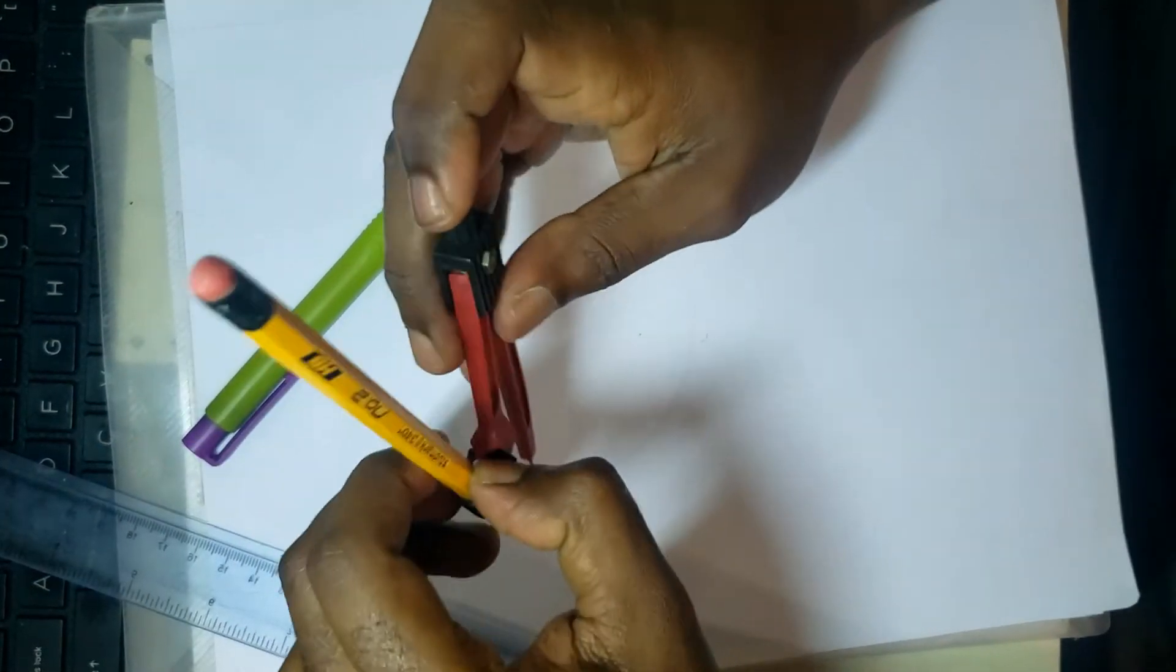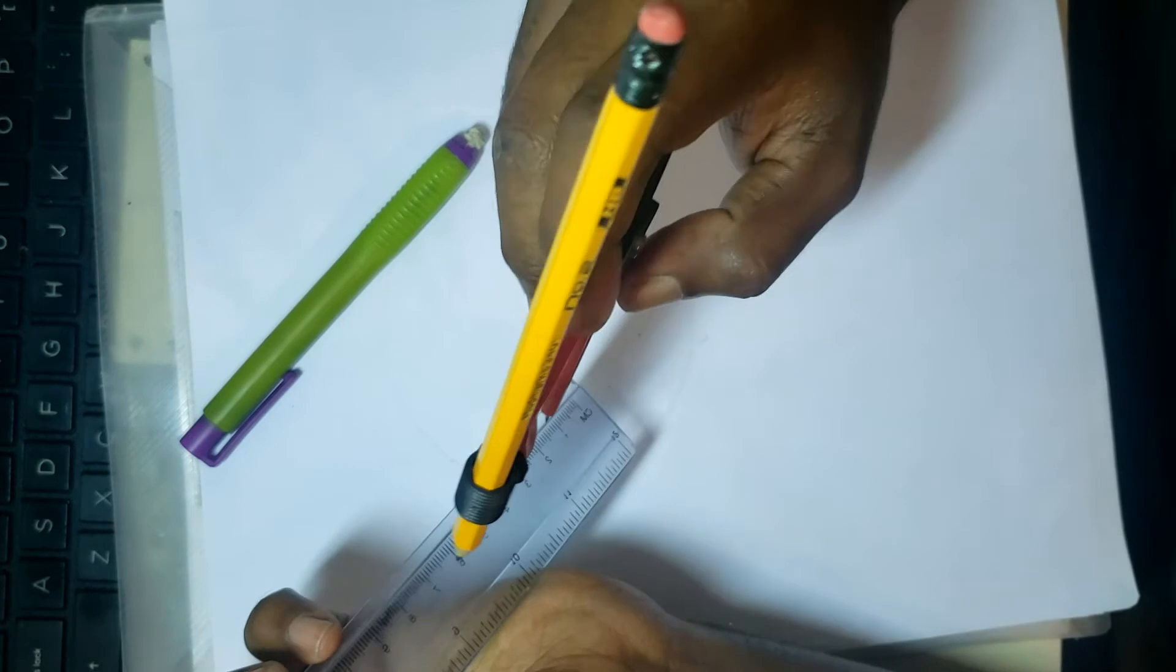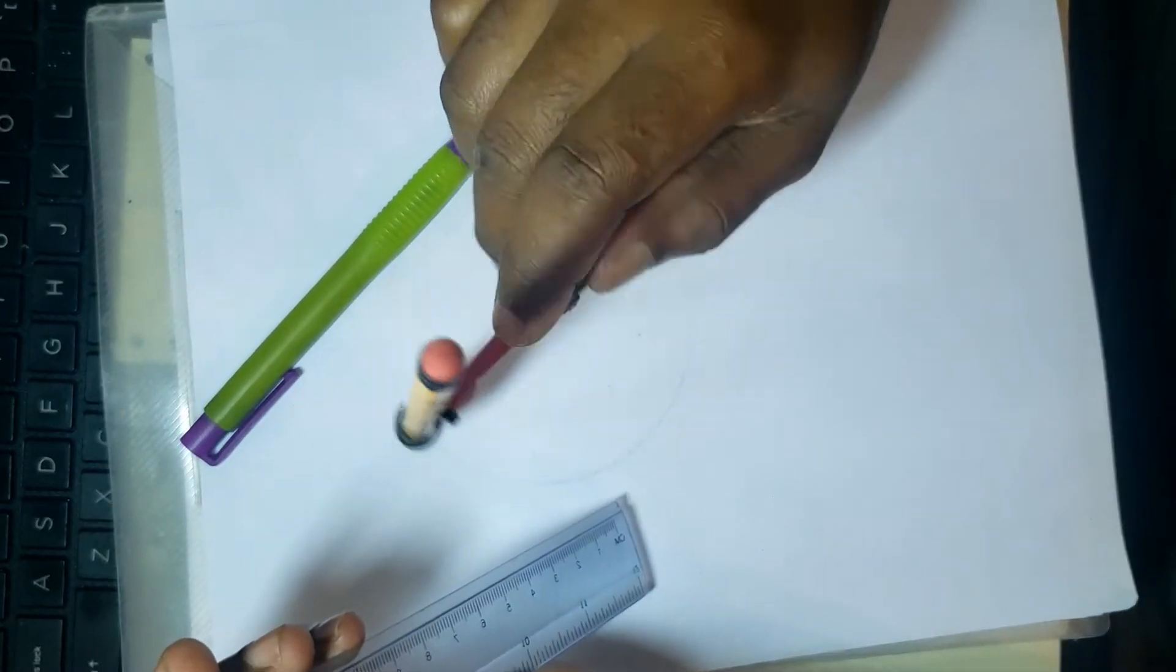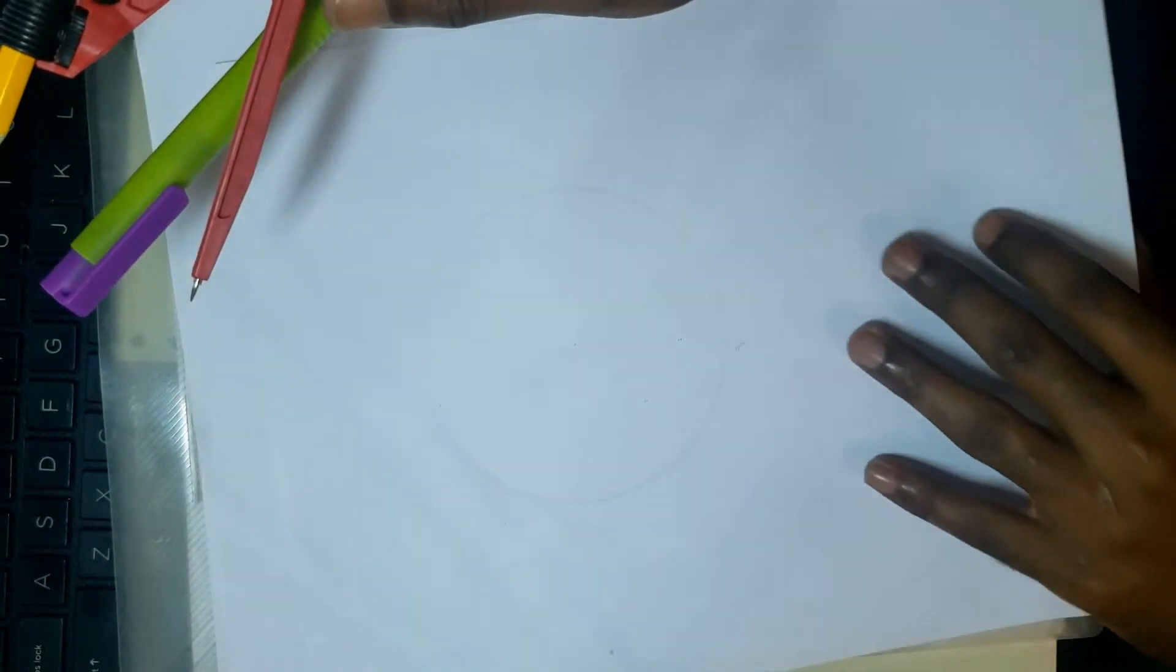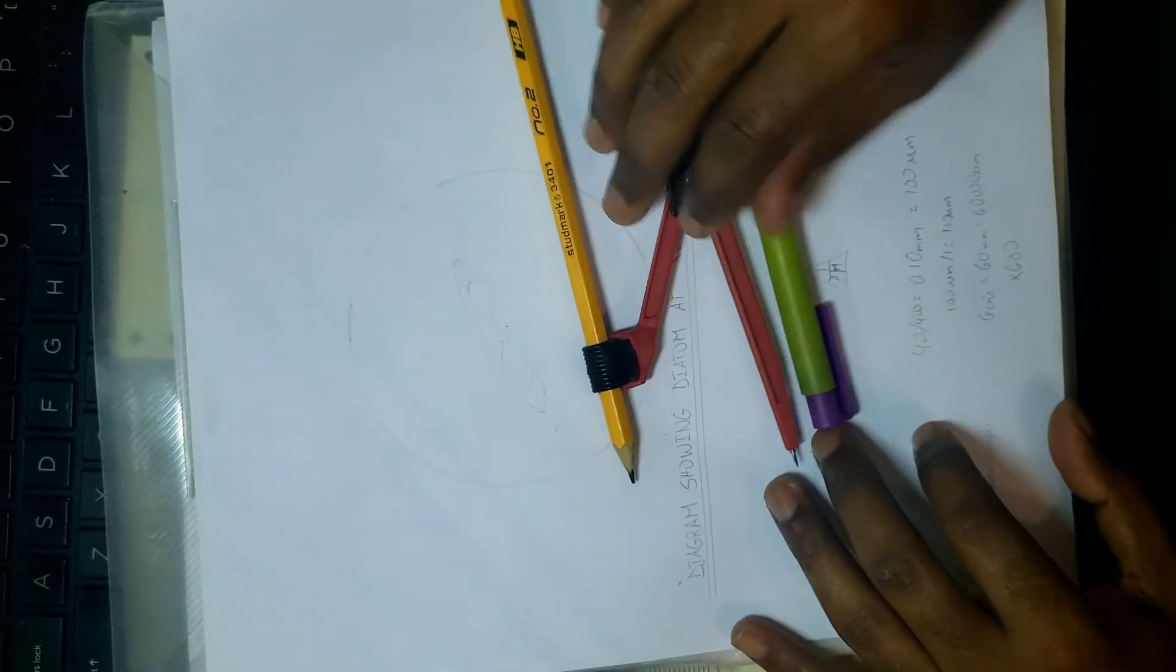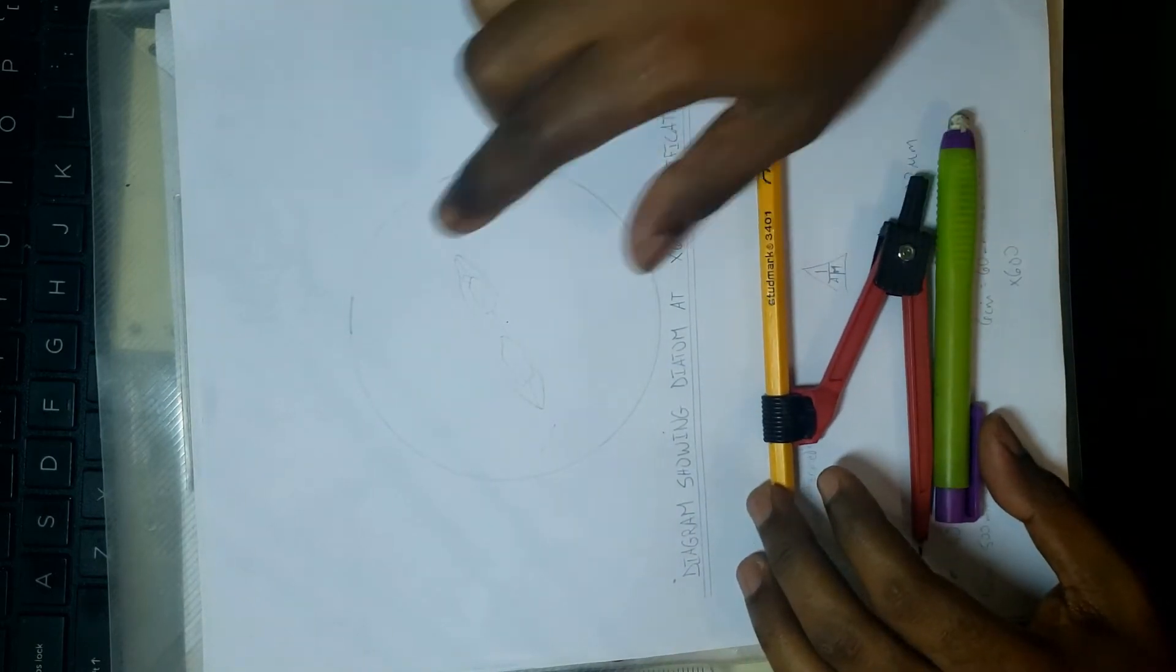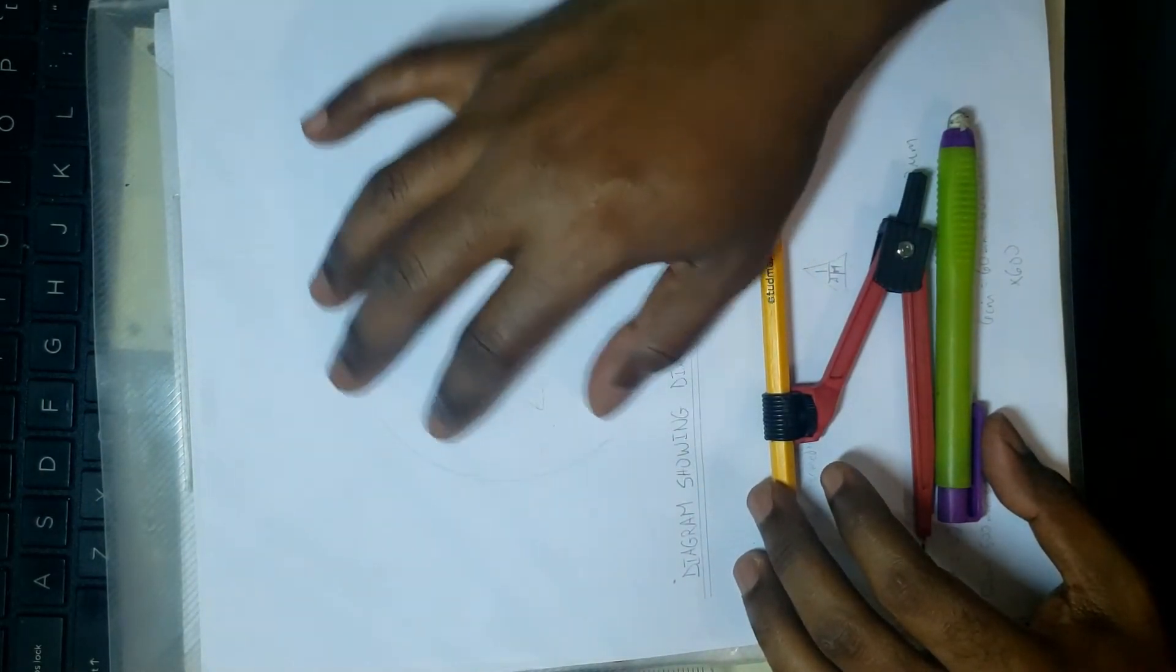First thing we normally do is draw our field of view. Typically we ask for at least a 10 centimeter diameter circle. I just measured on the ruler five centimeters, so five centimeter radius will give me a 10 centimeter diameter circle. I created that circle on a sheet of paper and that is the field of view that I'll use to draw the image.